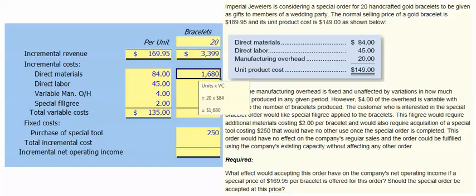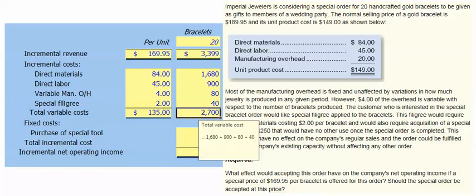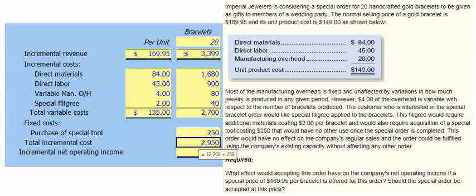Our direct material cost will be $84 per unit times 20 units, or $1,680. The direct labor cost will be $900. The total variable manufacturing overhead cost will be $40, and the total cost of the special filigree is $40. Thus, our total variable costs are $2,700. Once we add the cost of the special tool, which was $250, our total incremental cost is $2,950.